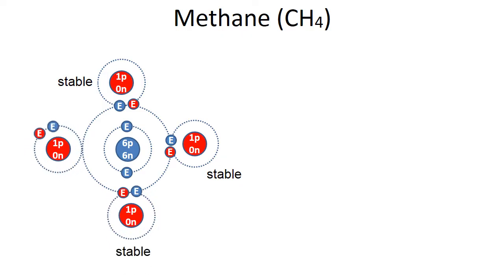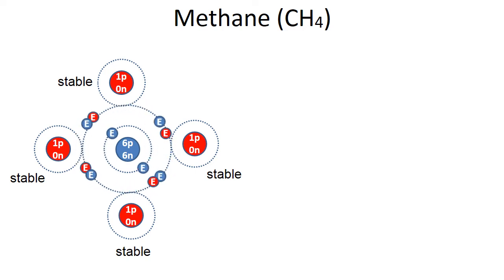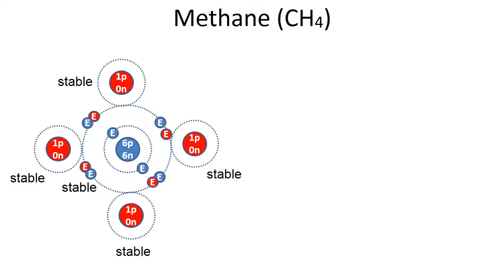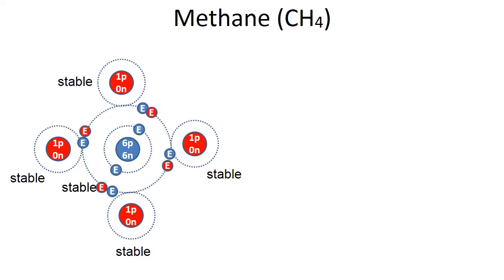The hydrogen on the left also has its own red electron and shares a blue electron from carbon — it too is stable. The blue carbon in the middle is also stable because it has its four electrons in the second level and borrows electrons from each hydrogen, filling its electron levels. This is a great example of a molecule connected by covalent bonds.